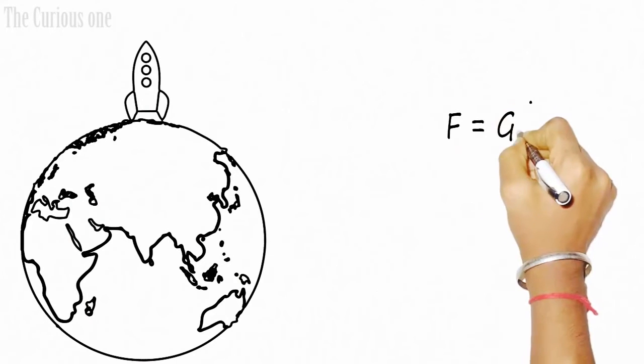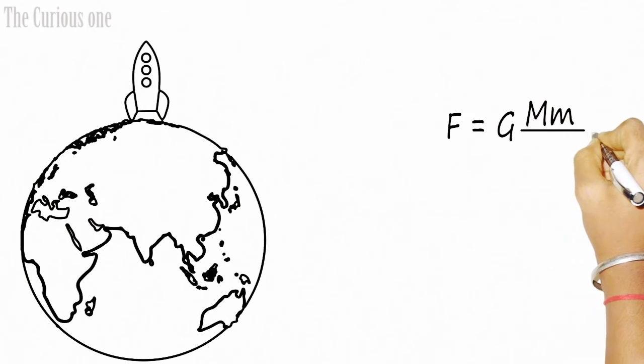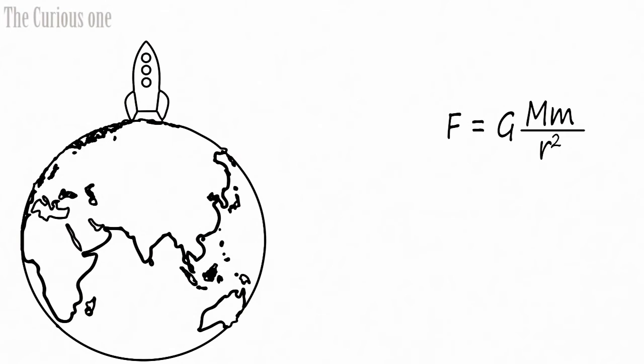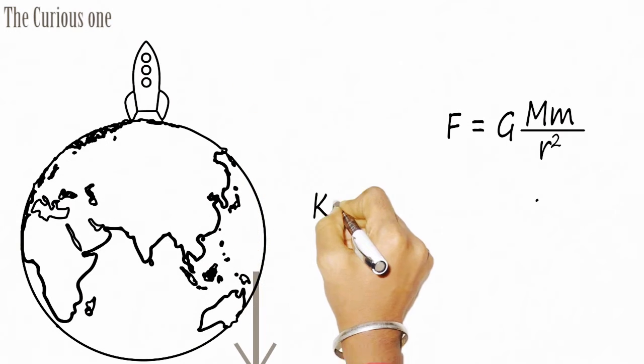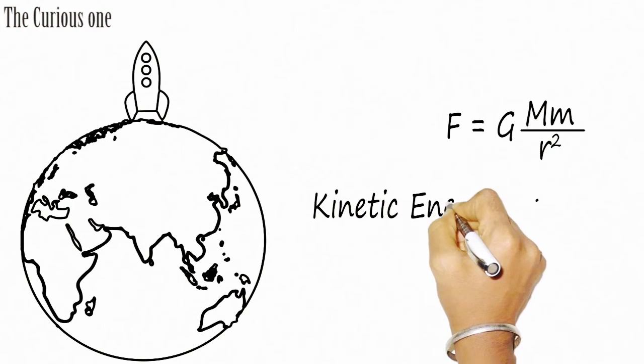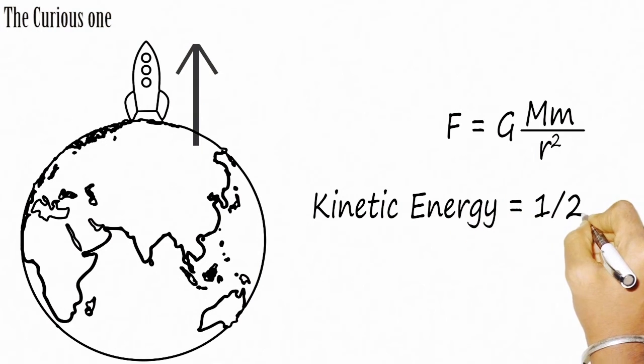The gravitational force on this rocket F is equal to GMm by r square, which acts in downward direction. At the time of the rocket launch, the kinetic energy of the rocket is equal to half mv square.